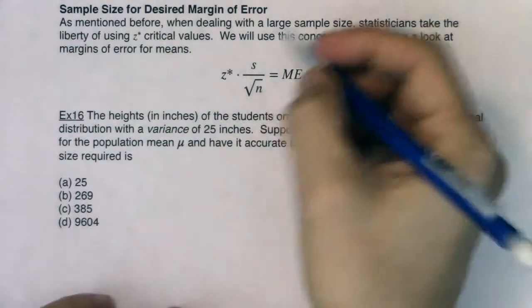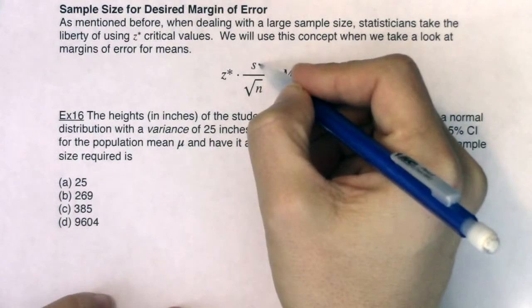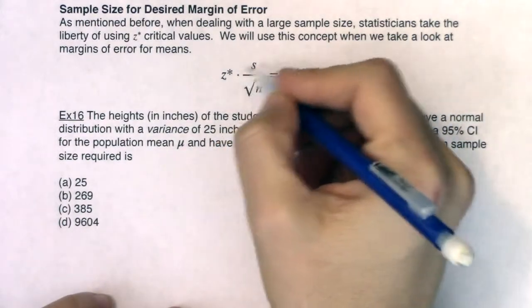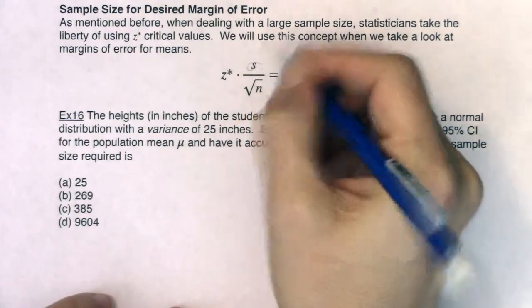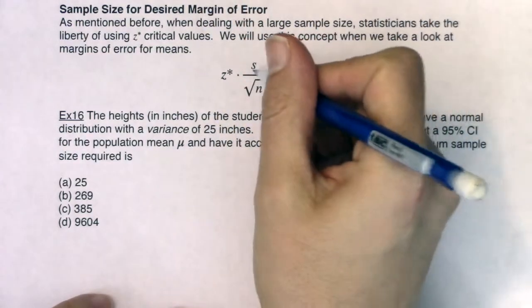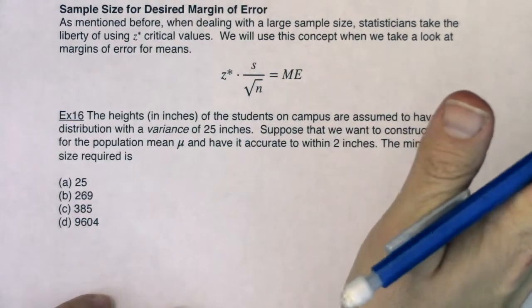And technically, if you had a Z star here, you should have a sigma here. And I say technically because that's how these two get mapped out. This should be sigma, but in the real world, we usually don't have sigma, we have S. So okay, no problem.